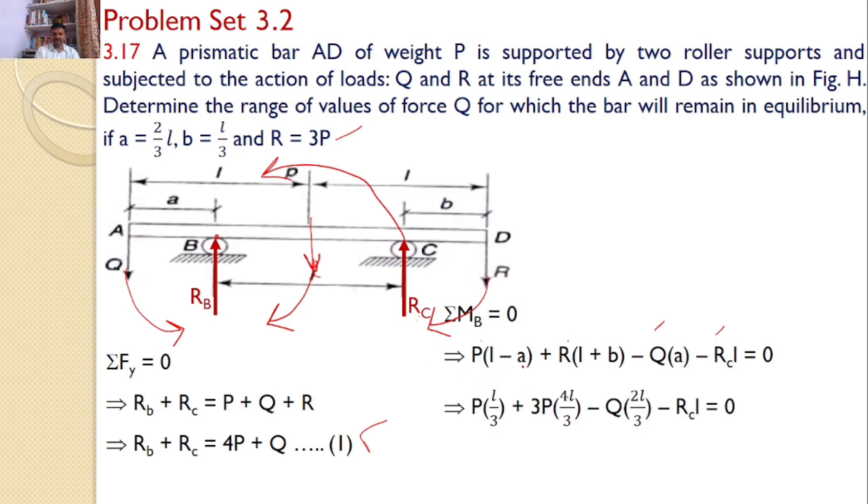Now, substituting the given values. A equals 2L by 3, so L minus 2L by 3 gives L by 3. So P times L by 3 plus R value is 3P. Hence, 3P times (L plus B), where B equals L by 3.